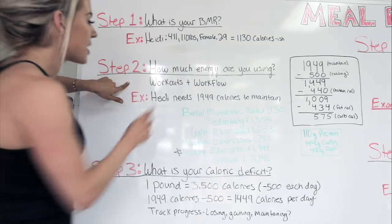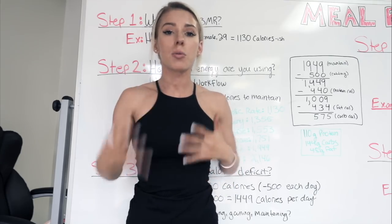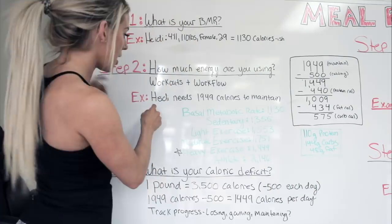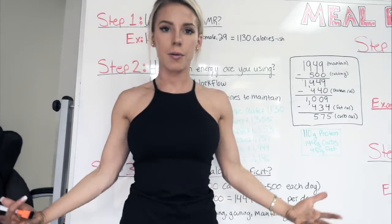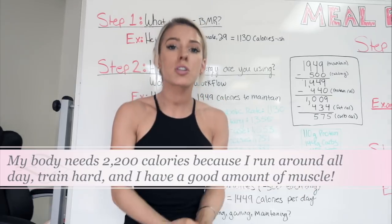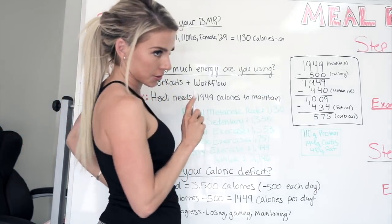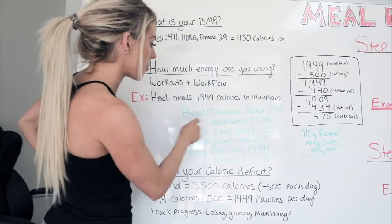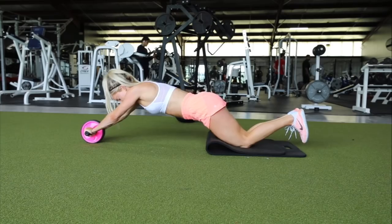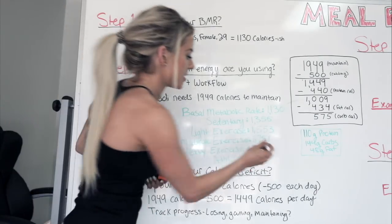Step two is how much energy you're using. If you're working out and very active throughout the day, your body requires a lot more calories — it's all about how much energy you use that day. Using an online calculator, I need 1,949 calories to maintain my physique. That's not entirely accurate though — I usually eat about 2,200 calories per day to maintain, because I have a good amount of muscle. The more muscle you have, the more calories your body requires. So my BMR is 1,130, and with heavy exercise selected, the calculator gives me 1,949 calories.